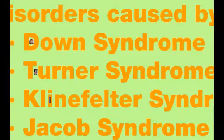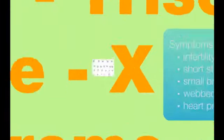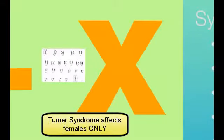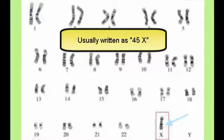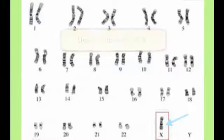The next disorder caused by non-disjunction is Turner syndrome. If you have Turner syndrome, you are female, but instead of the normal two X chromosomes, you only have one. Looking at this karyotype, they have all normal pairs of chromosomes, but this individual has only one X chromosome — no second X and no Y chromosome. This is written as 45,X to show they have 45 chromosomes instead of the normal 46, with only one X.